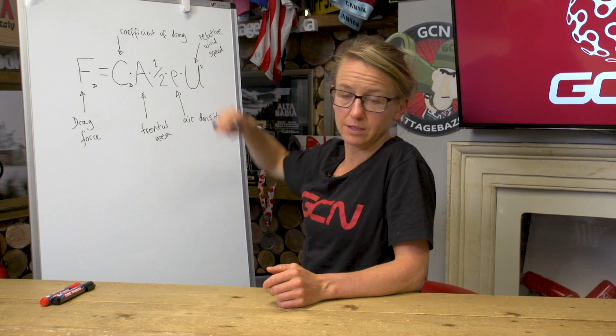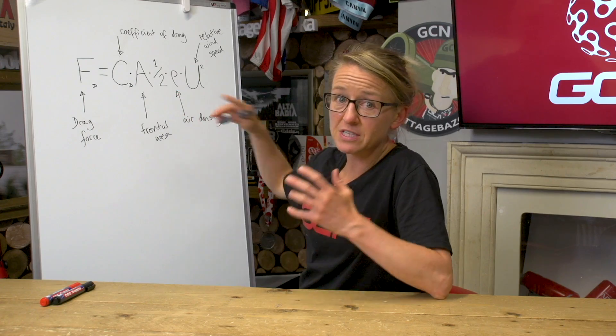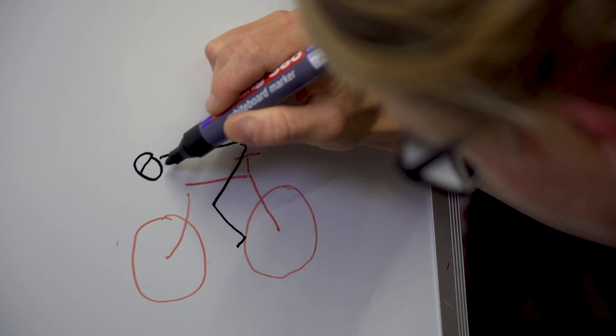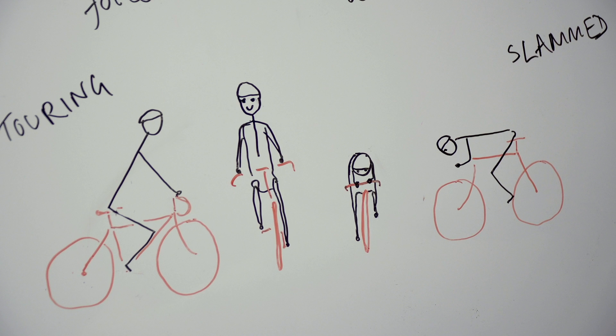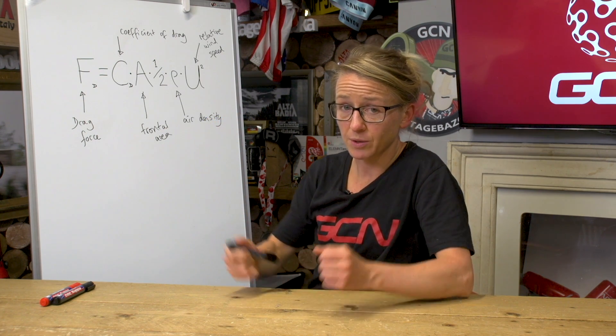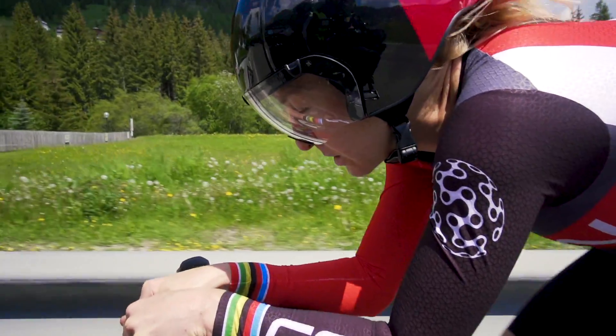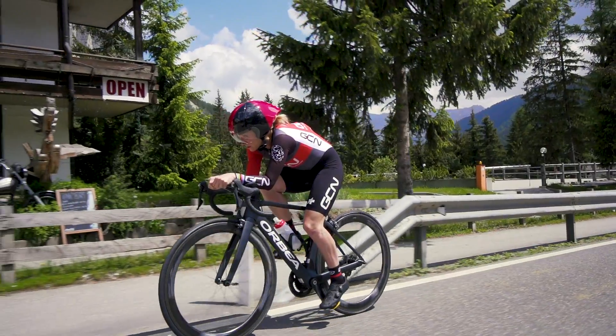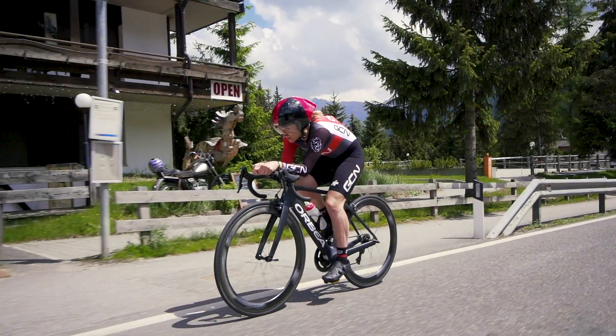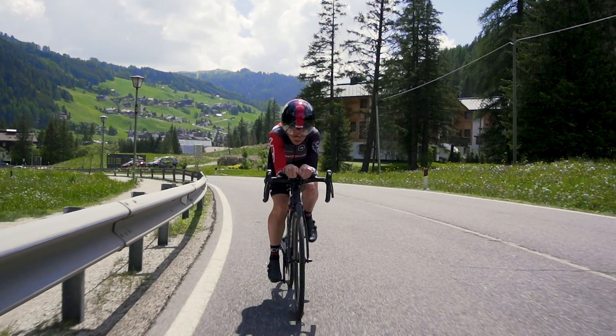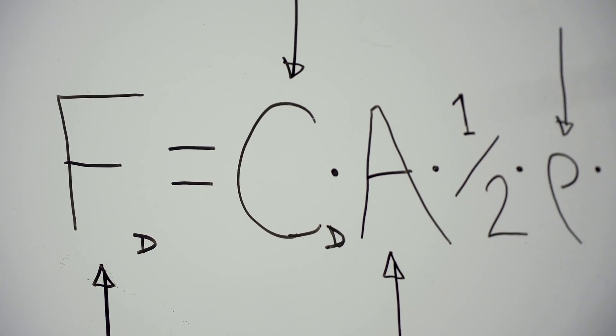Now we get to frontal area, A — this is what everyone thinks about when they want to get more aero: making themselves smaller in the wind. Your drag is directly proportional to frontal area, so the smaller the frontal area, the lower the drag — hence everyone wanting to get slammed. You can reduce frontal area in more ways than just getting lower: aero bars make your elbows narrower, and head position makes a huge difference. It takes a lot of discipline and strength to keep your neck cricked low so you can still see where you're going — as Graham Obree would testify.